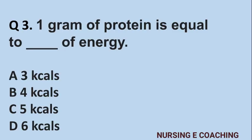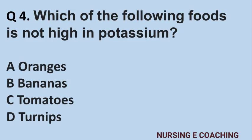Question number 3: One gram of protein is equal to how many kilocalories of energy? A) 3 kcal, B) 4 kcal, C) 5 kcal, D) 6 kcal. Answer is B) 4 kcal.